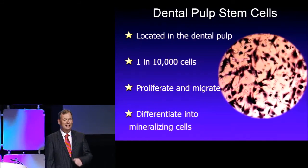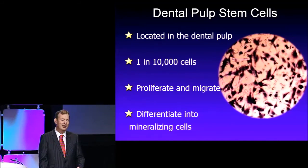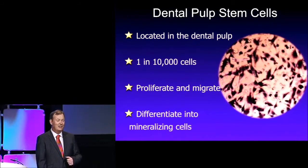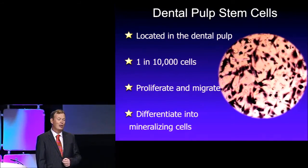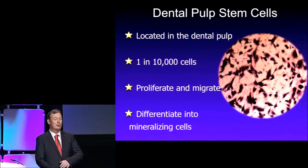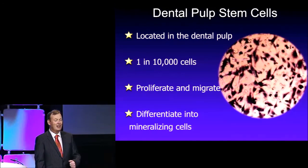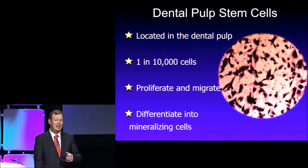What dentists and researchers like to do is locate these dental pulp stem cells. They are located in the dental pulp, but in very small concentrations — only 1 in every 10,000 cells. They are able to proliferate, meaning they can make more of themselves, and they can migrate from one point to another. They are also able to change their cell type, so they can change from being a stem cell to being a mineralizing cell.